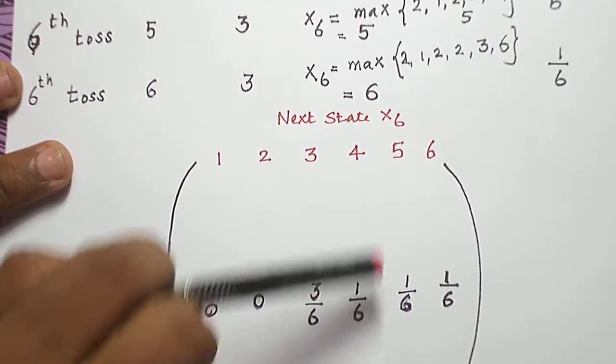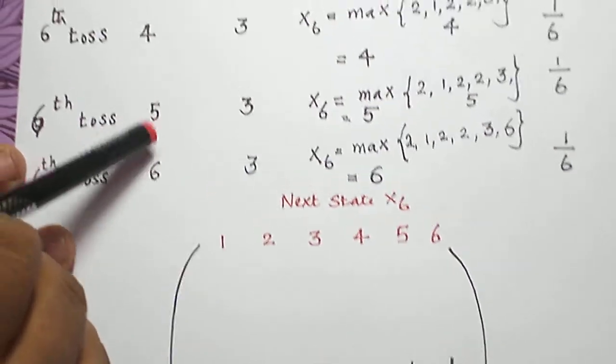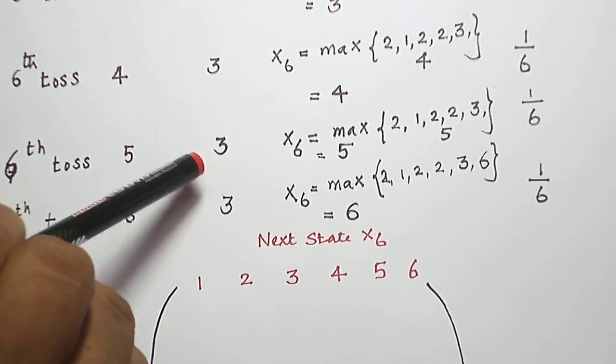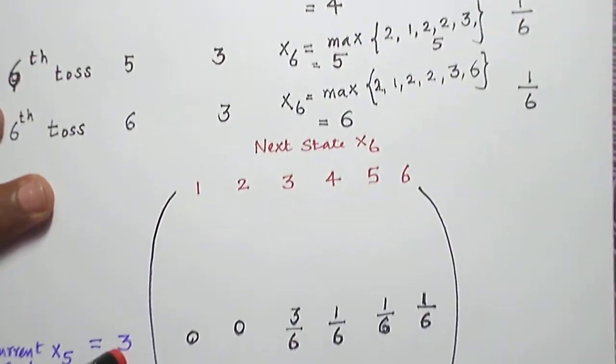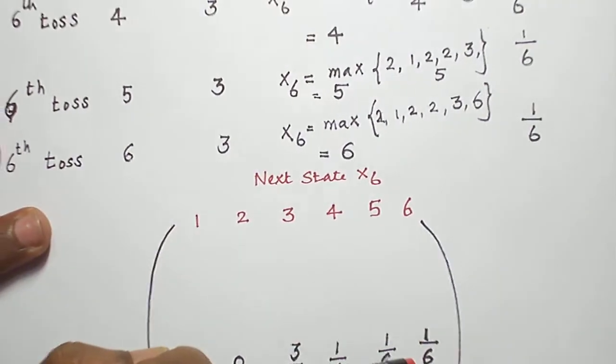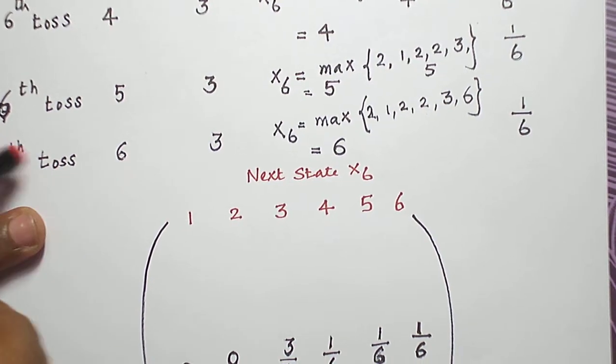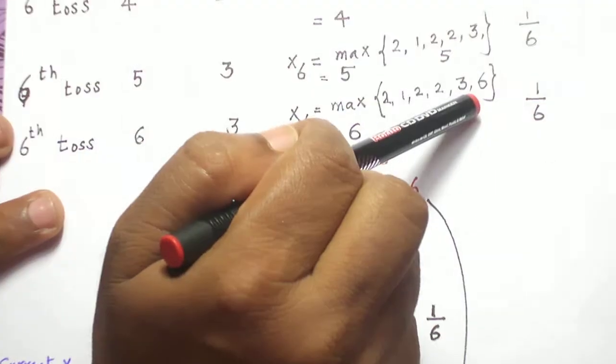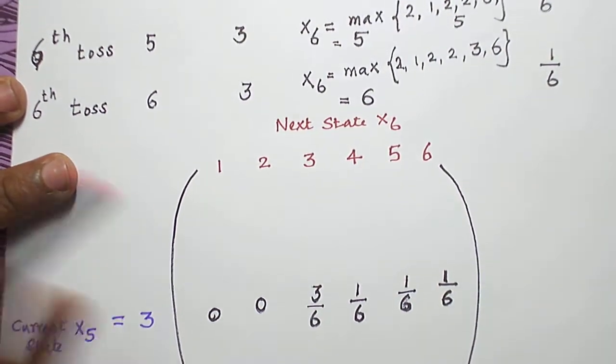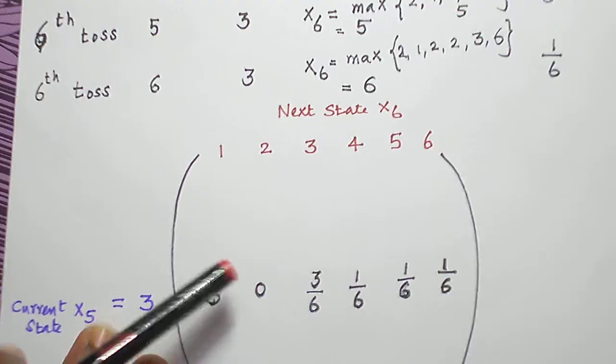State 3 to 5 will move if the outcome is 5, and probability of getting 5 is 1 by 6. From state 3 to state 6, it will move if the 6th toss outcome is 6. Probability of getting 6 in the 6th toss is 1 by 6. That is what is written here.